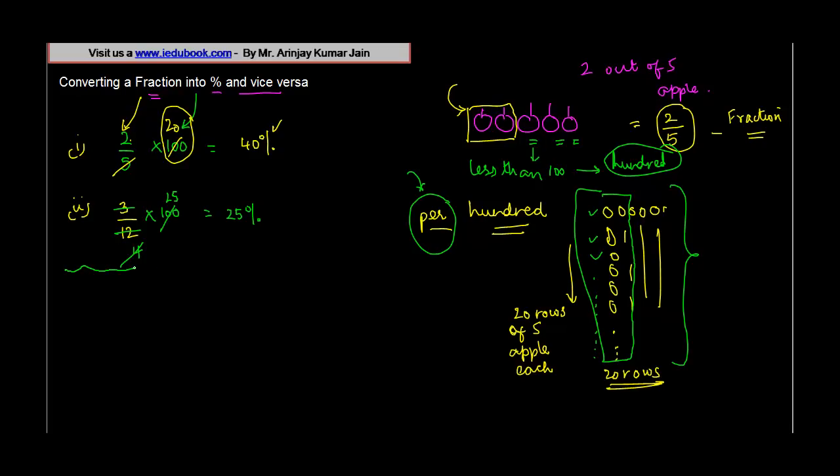So this was basically converting fractions into percentage. Now let's see the other way around. So let's say you have thirty percent. Thirty percent means what? Thirty percent means thirty out of hundred.